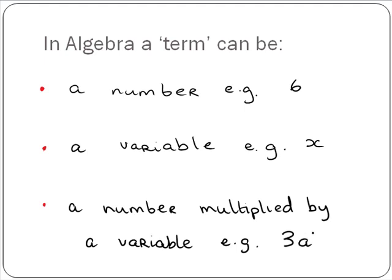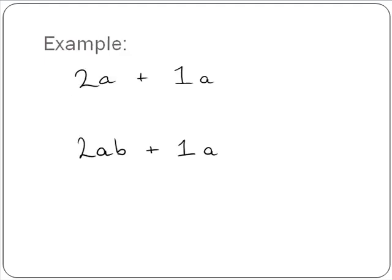Now just like we can only add bananas to bananas and apples to apples, in algebra we can only add like terms. So if we look at examples, we can add 2A plus 1A because they are like terms. They both contain A. So we get 3A.